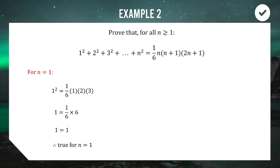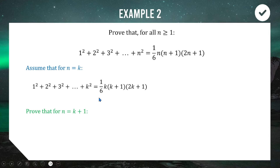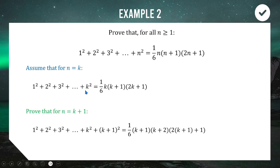Step 2: assume the expression holds true when n equals k — that is our assumption. Step 3: letting n equal k+1. Rather than changing k² to (k+1)², I recommend writing in the next term, which is (k+1)². On the right-hand side, wherever you see a k, replace it with k+1 — so k+1 becomes k+2, and 2k becomes 2(k+1).